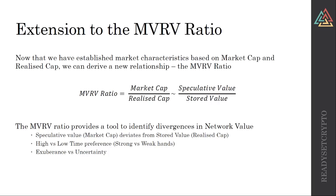We can extend this study by creating a simple ratio from the comparison between market cap and realized cap: the MVRV ratio — market value to realized value — or market cap divided by realized cap. The way I look at this is speculative value divided by stored value: what is the actual wealth stored inside the network versus what do people think the network is worth? The ratio provides a tool to identify divergences in network valuation, helping discern speculative versus stored value, high versus low time preference, strong versus weak hands, and exuberance versus certainty.